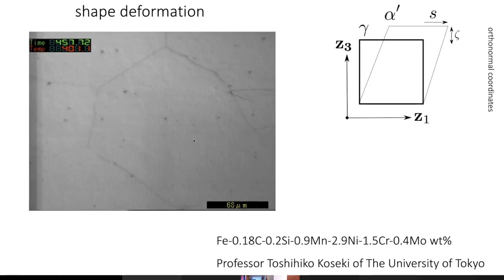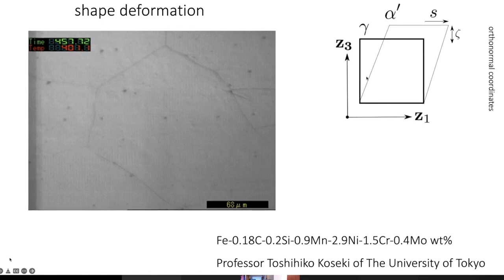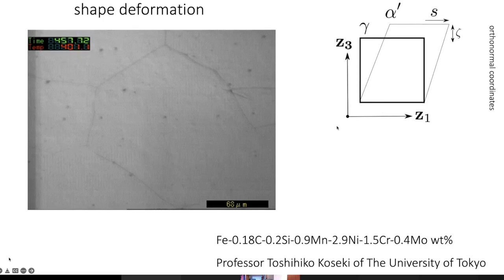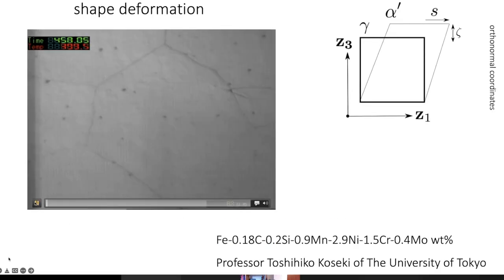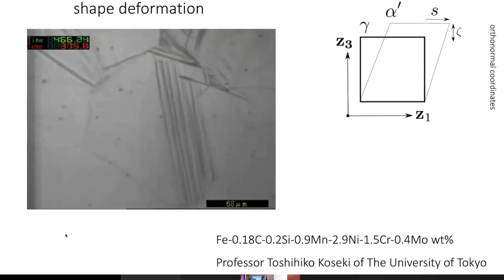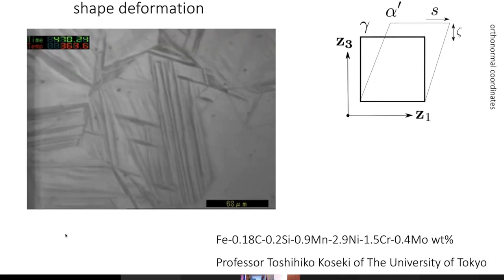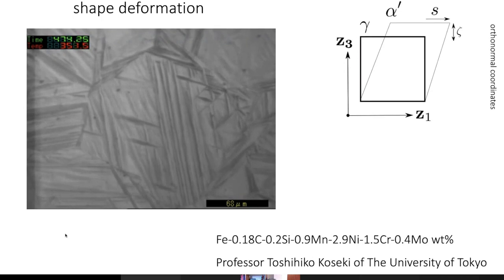The main aspect of transformation induced plasticity is that there is a shape deformation that accompanies the formation of martensite from austenite. If this square represents the austenite, then as a consequence of transformation into martensite you get a deformation where there is a shear of the order of 0.26, and a volume expansion normal to the plate of the martensite of 0.03. These are physical deformations which you can see with your own eyes, and those deformations have an influence on the ductility of the steel.